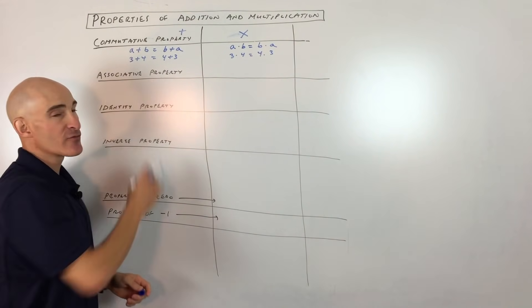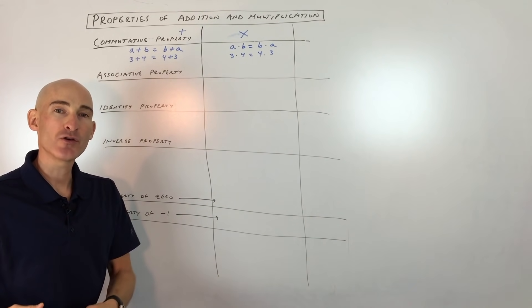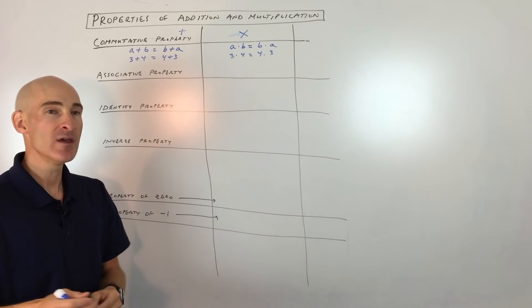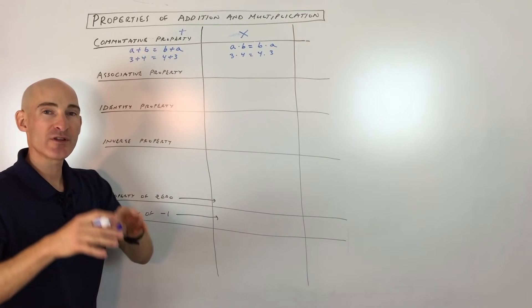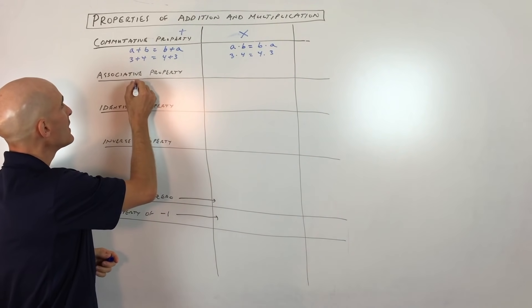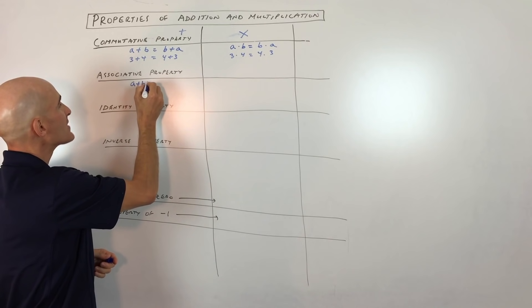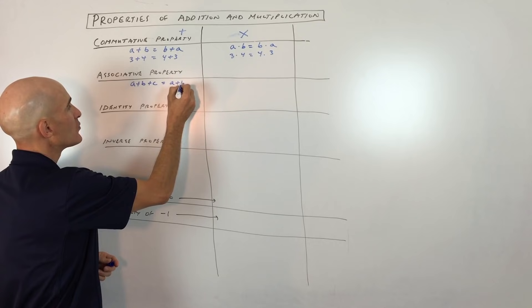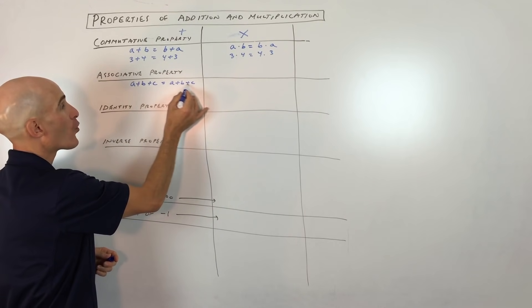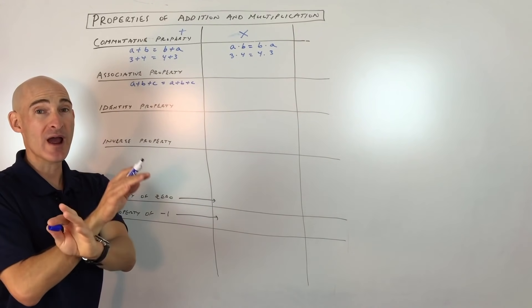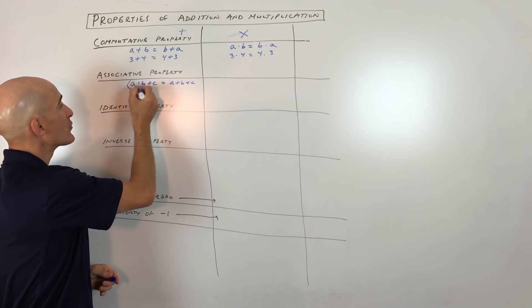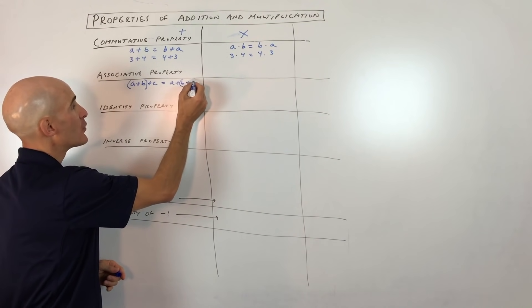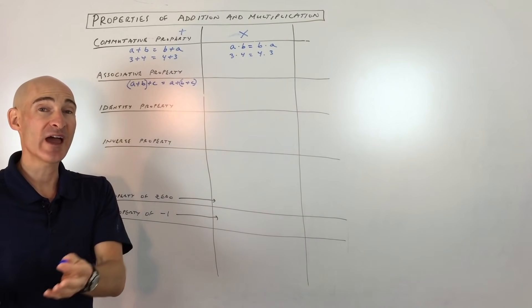Now the associative property — think about who your friends are, who you associate with, who you hang out with at school. That's your group. So when you think of the associative property, think of grouping. In your book or class, they'll show you something like this: A plus B plus C equals A plus B plus C. Notice the order didn't change like the commutative property, but they're grouping the first two quantities here, and the last two quantities there.